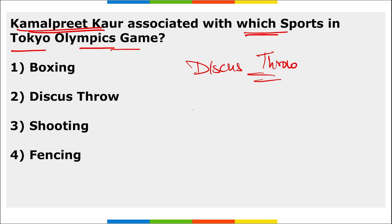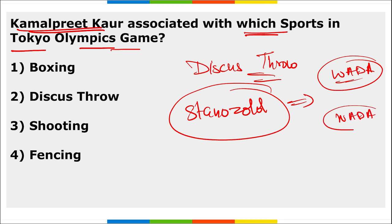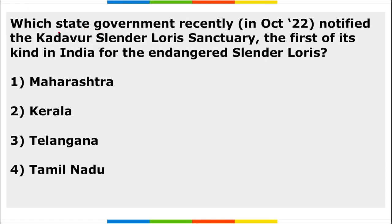Kamalpreet Kaur, who is associated with discus throw and competed at the Tokyo Olympics, was recently banned for three years for using the prohibited substance Stanozolol. WADA operates at the world level and NADA at the national level to monitor doping substances consumed by athletes.